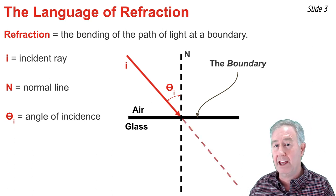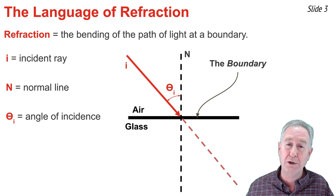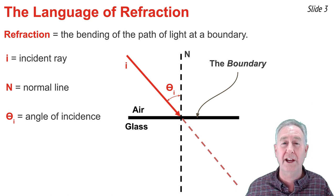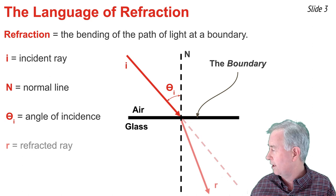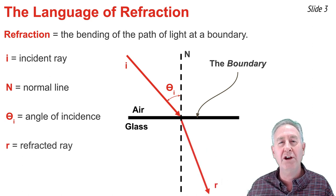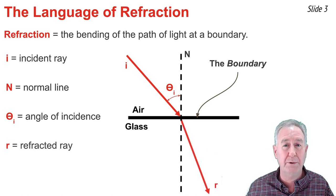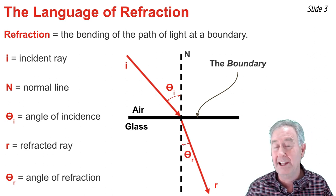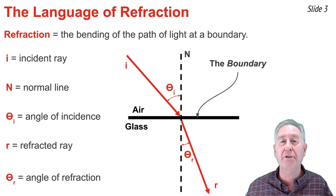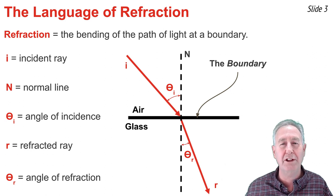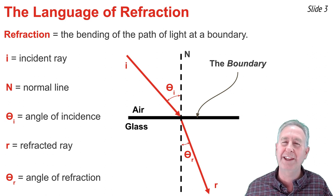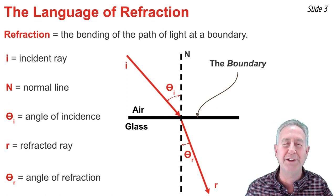Because light refracts at the boundary, it won't travel along a straight-line path, but instead will bend either towards or away from the normal line. For the case of air traveling into glass, the bending will be towards the normal line. The angle measured between the normal line and the refracted ray is known as the angle of refraction. The angle of refraction will not be equal to the angle of incidence, and the more refraction that takes place, the greater the difference between the two angles.